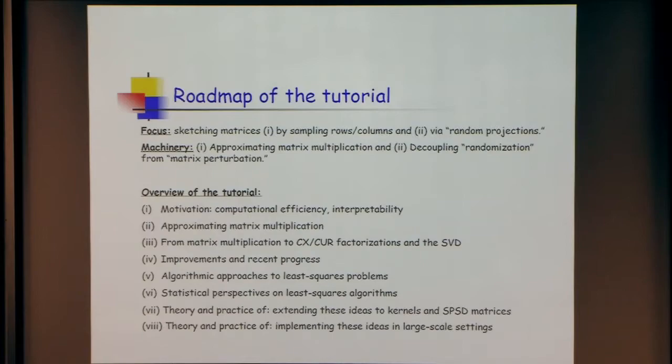Although the randomness is inside the algorithm, you might imagine that the randomness denoise the data in some way, so you might get improved statistical results. In a lot of cases you do see some regularization properties. Why that's the case is just starting to be understood. I'd like to describe a statistical perspective on least squares — where the model is the right thing to do — and highlight some differences between the two approaches.